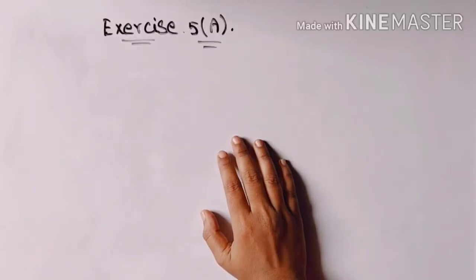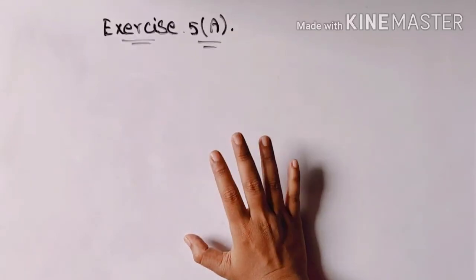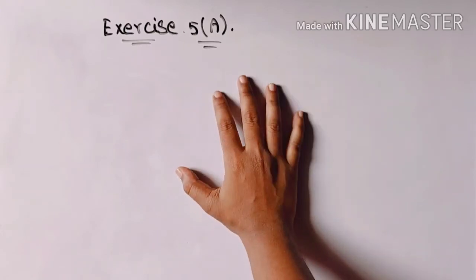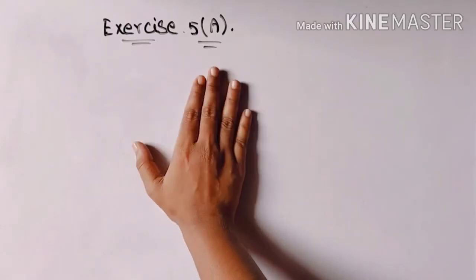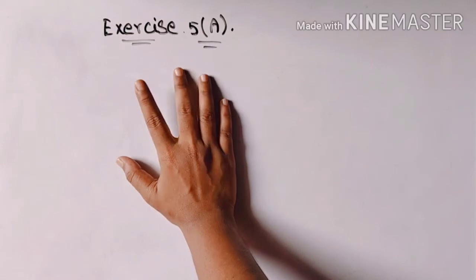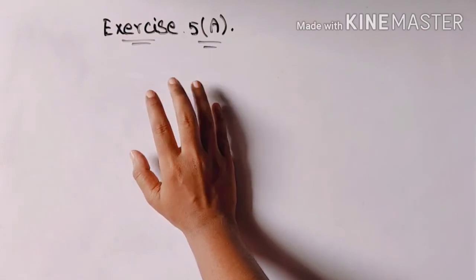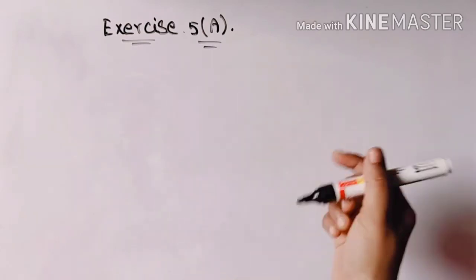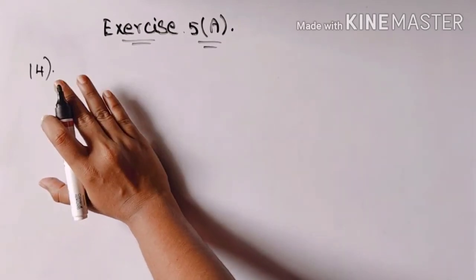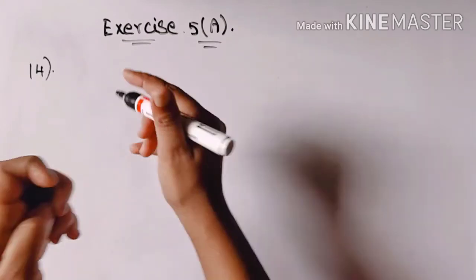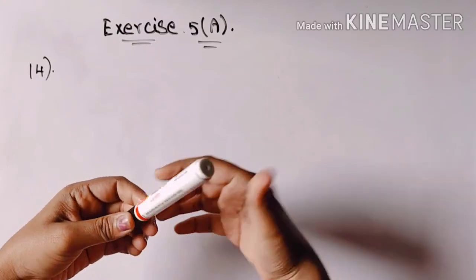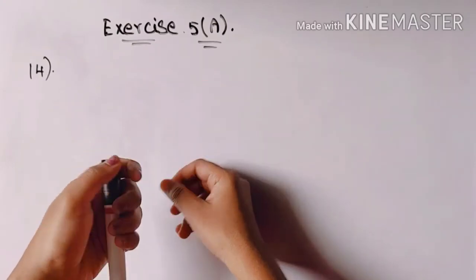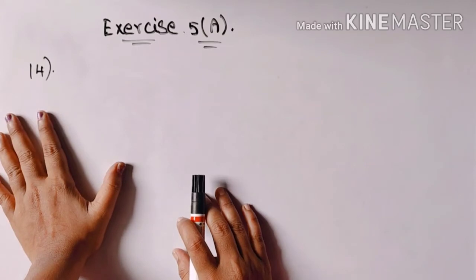Hello friends. In the last video we started the permutations and combinations chapter, and in this video we will complete exercise 5EA. In case you haven't seen the first video, the link is in the description box — please watch that. And now the 14th question.